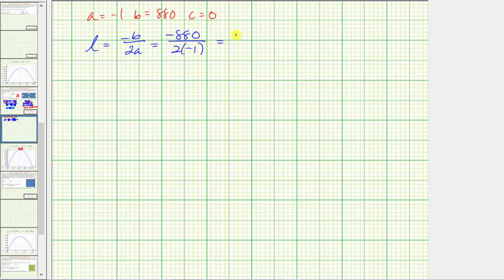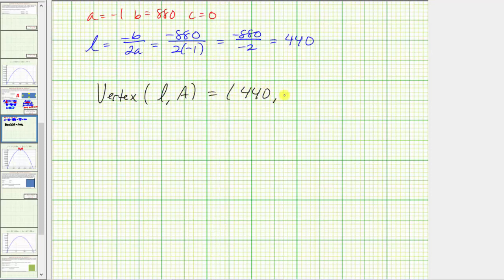The x coordinate, or L coordinate, equals negative b divided by 2a, which is negative 880 divided by two times negative one, which equals negative 880 divided by negative two, which equals positive 440. So when the length of the rectangle is 440 centimeters, the area is maximized. The vertex has coordinates (L, A), and we now know L equals 440. To determine the maximum area, we evaluate the area equation when L equals 440.